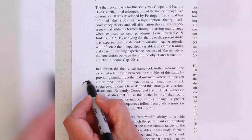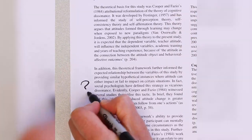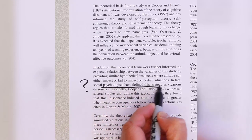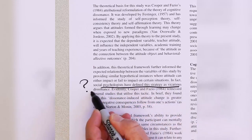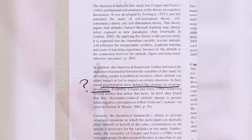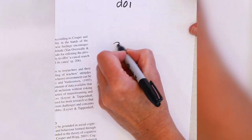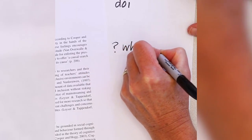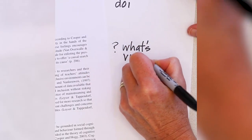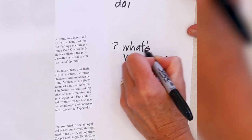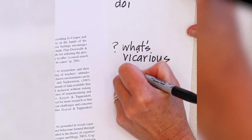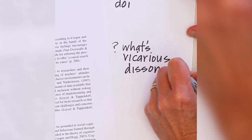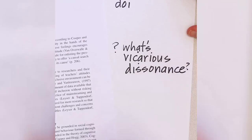A question mark, of course, means a question you have. This symbol could also refer to a question raised by the article or to something you find confusing. However you use it, make sure to write down the question or issue in full on your separate document. It's hard to remember all the questions you have while reading, so just making a question mark that you can refer to will help you hold your questions until you have time to discuss them with others.